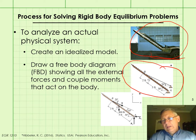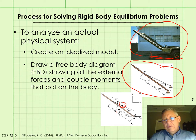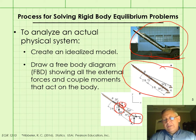The next step is to draw a free body diagram of that model, showing all of the external forces and couple moments that act on the body. So we remove the ramp — cut it away from the trailer — and replace the cable with the tension acting on the ramp. We need to show the weight of the ramp acting through the center of gravity, and then show the reaction force at A. We also call this the support reaction at A, which we'll discuss in the next few slides.